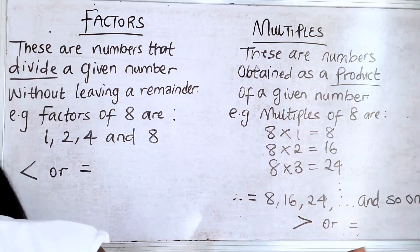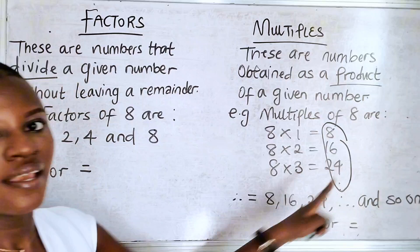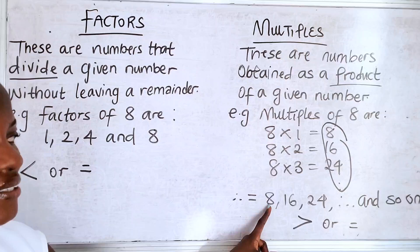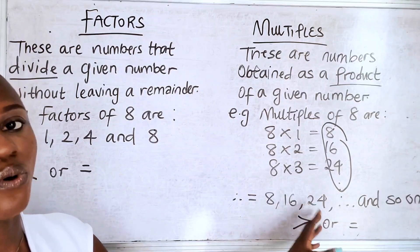So what makes up the multiples of 8? This makes up the multiples of 8. That's why you see that the answer is 8, 16, 24, and so on.